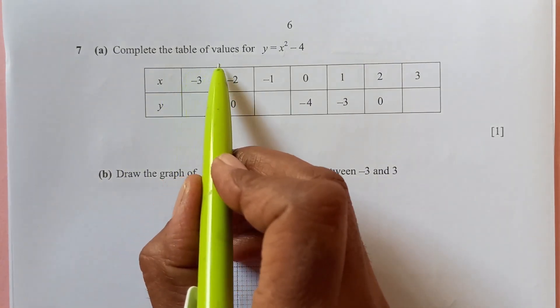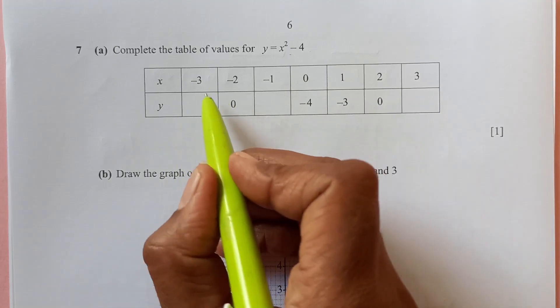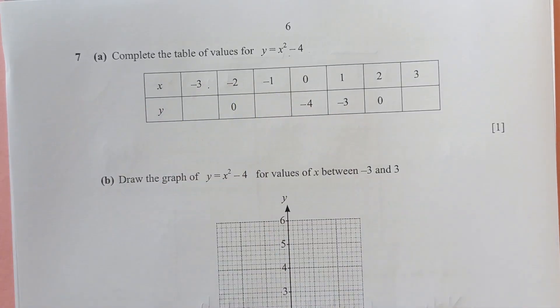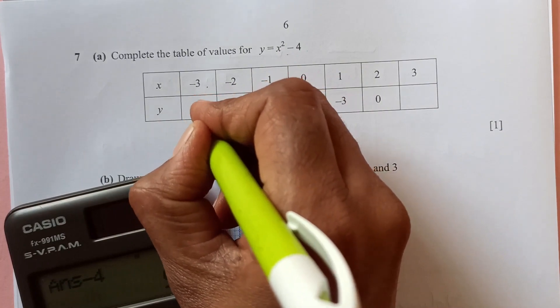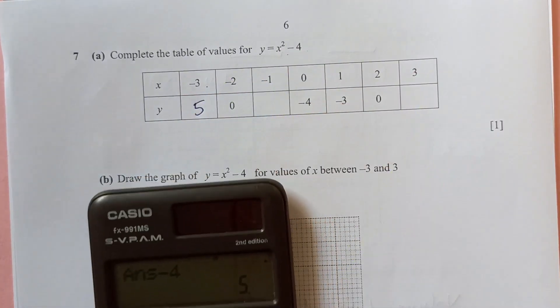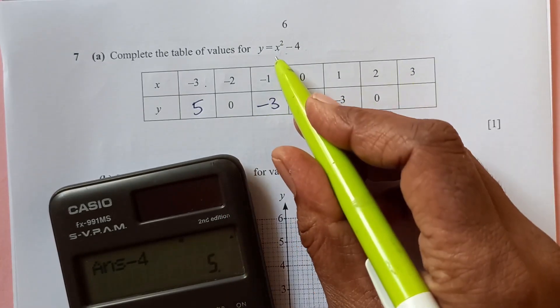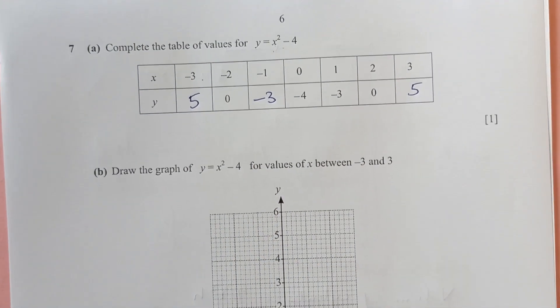Question 7. Complete the table of values for y equals to x squared minus 4. So, we have this here. When x is negative 3, what will be y? When x is negative 3, you can just use the calculator here. When it is negative 3, remember to put the brackets. It is negative 3 power 2 minus 4. So this is 5. And x negative 1, negative 1 squared is 1 minus 4. That is negative 3. And 3, 3 squared is 9, 9 minus 4. It is 5. So, by doing this, you will score 1 mark.